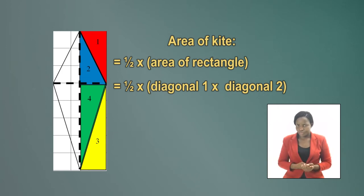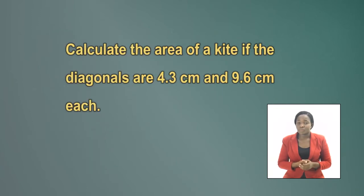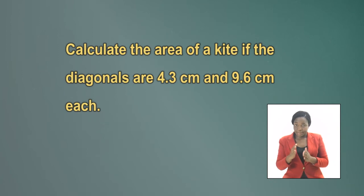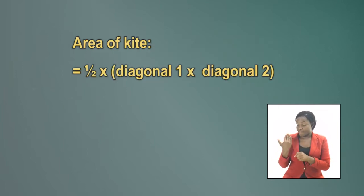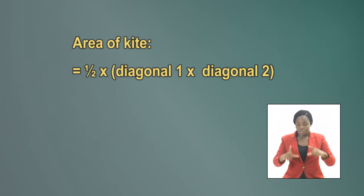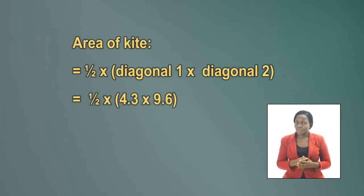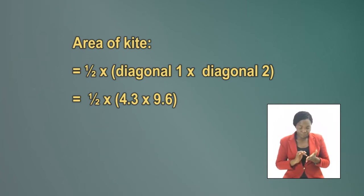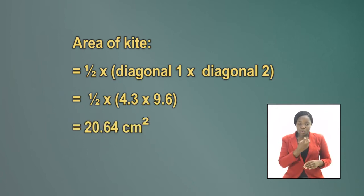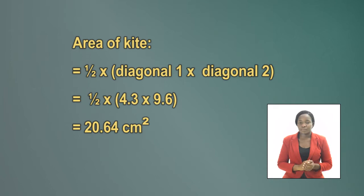So we can conclude that the area of a kite is half times diagonal 1 times diagonal 2. Now let's do an example to find the area of a kite. Calculate the area of a kite if the diagonals are 4.3 and 9.6 cm respectively. The area of a kite is a half times the long diagonal times the short diagonal. Half times 4.3 times 9.6 comes to 20.64 cm squared.